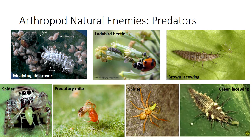Predatory mites are important in regulating populations of phytophagous mites, including spider mites. Some mites that parasitize immature or adult insects or feed on insect eggs are potentially useful control agents for certain scale insects, grasshoppers, and stored product pests. Spiders are diverse and efficient predators with a much greater impact on insect populations than mites, particularly in tropical ecosystems.